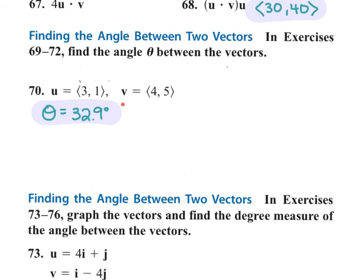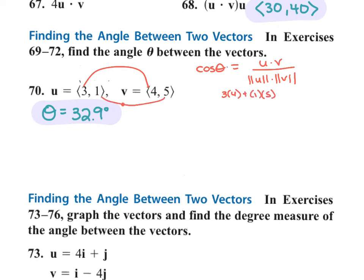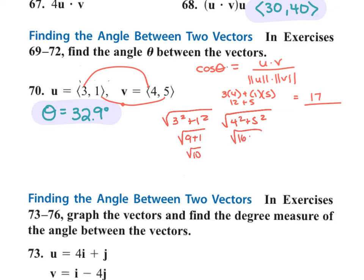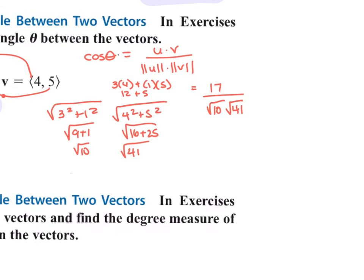Problem 70's angle between — the angle between formula is that the cosine of theta equals the dot product over the magnitude of U times the magnitude of V. Dot product: 3 times 4 plus 1 times 5 gives 12 plus 5, which is 17 — that's your numerator. The denominator: magnitude of U is the square root of 3 squared plus 1 squared, and magnitude of V is the square root of 4 squared plus 5 squared, giving square root of 10 times square root of 41. Typing it in gives 32.9 degrees.